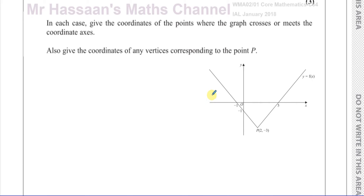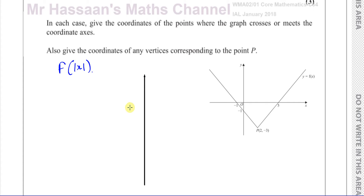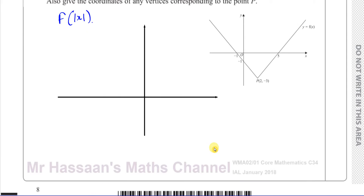So basically, what happens when you have the transformation f of the modulus of x, when it's inside the function — it's a horizontal transformation, not a vertical transformation. Everything on the positive side of the x-axis remains exactly as it is. So all of this side will stay exactly the same.